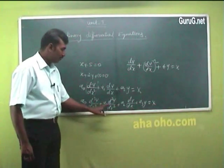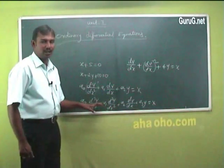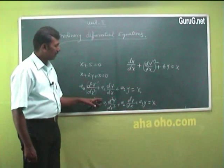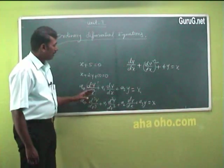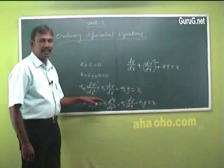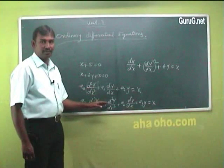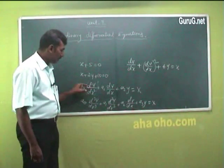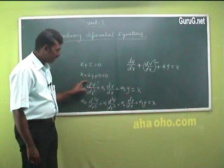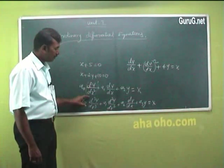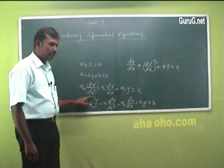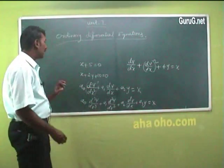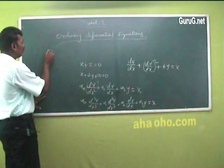Here a₀, a₁, a₂, a₃ are constants. Now we will learn the topic: Higher Order Linear Differential Equations with Constant Coefficients — third order, fourth order, fifth order, and nth order differential equations.